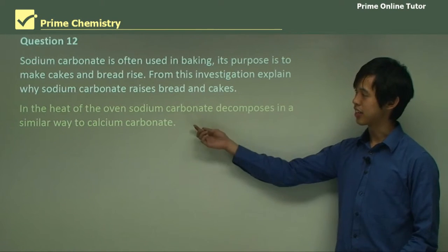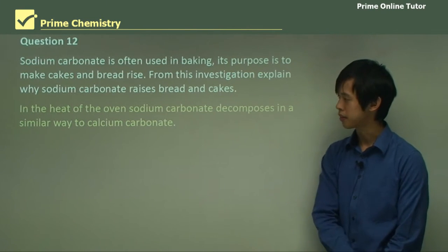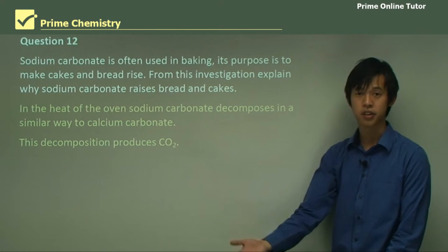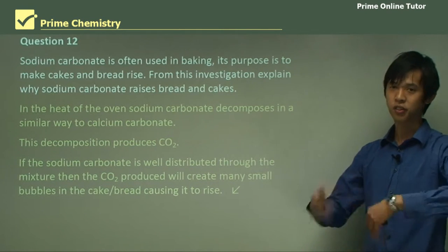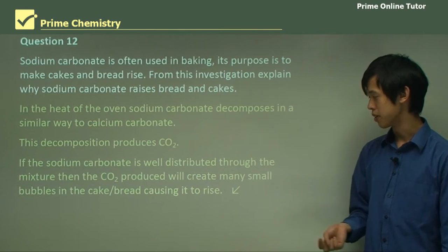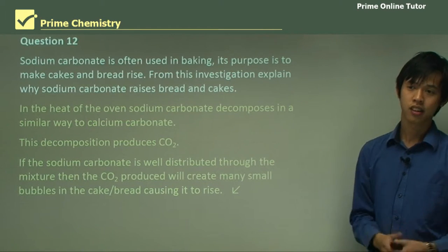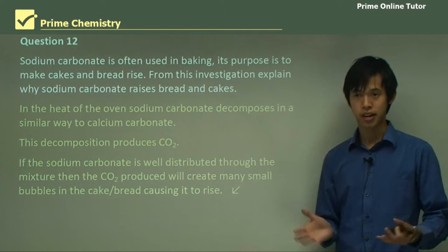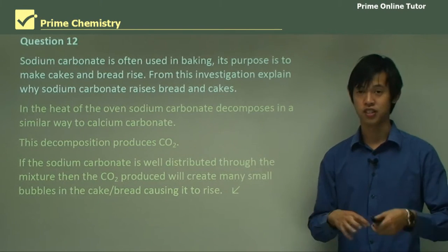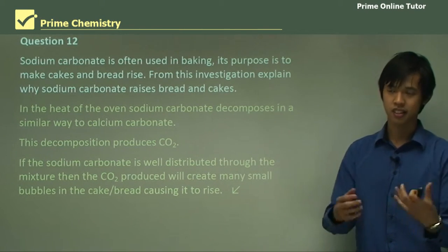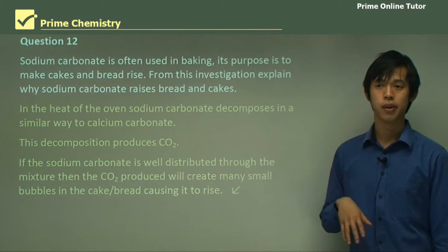So remembering that when you bake things, you put it in an oven so it gets hot. So in the heat of the oven, sodium carbonate decomposes in a similar way to calcium carbonate. Now that decomposition produces CO2. Now if the sodium carbonate is well distributed through the mixture, so if you've mixed your dough very well, then the CO2 produced will create lots of little bubbles in the cake. And those little bubbles obviously take up space. And by taking up space, they make the bread or cake rise. So that's under the assumption of course that you've distributed it well throughout your system, you've mixed your dough very well. And so that's why cakes rise when you add this sodium carbonate or sodium bicarbonate.